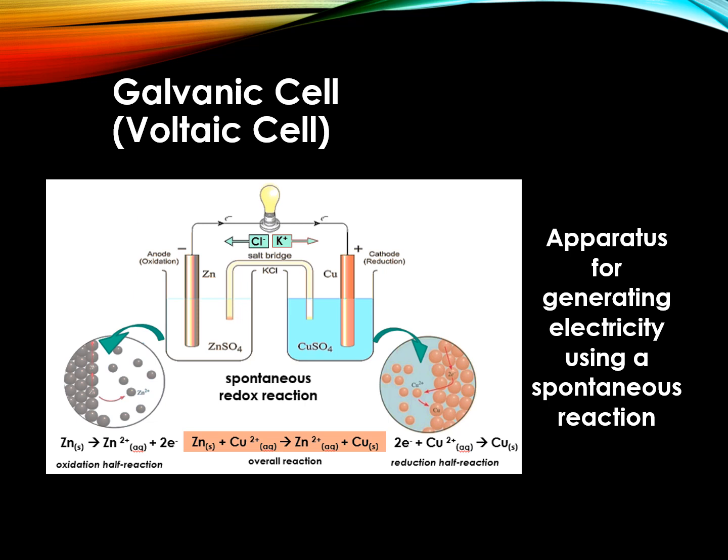Electrons flow externally from the zinc electrode at the anode to the copper electrode at the cathode. As the reaction progresses, a constant flow of electrons occur, thereby generating electricity.